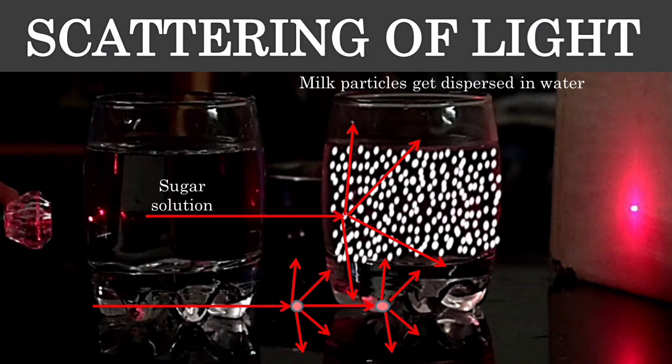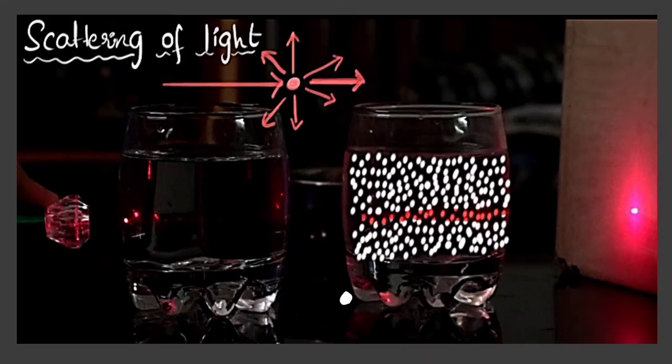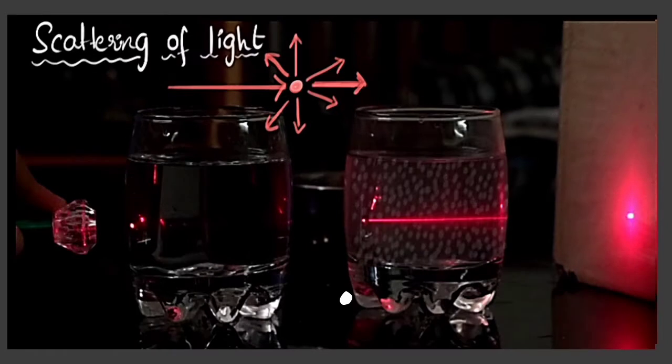So what happens is that you see a collection of particles that are glowing red in color. Since these particles are so tiny in nature we perceive it as a beam of light. So that is why the light path is visible to us.